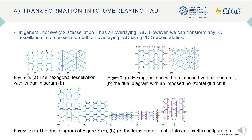However, not every two-dimensional polyhedral system has an overlaying TAD structure. For instance, given the hexagonal system of Figure 6a, the vertical grid doesn't provide an overlaying TAD — it cuts the hexagonal system into rectangles and triangles, as shown in Figure 7a. However, using 2DGS, we can turn this system into a system with an overlaying TAD structure. We consider the dual diagram of Figure 6a, which is Figure 6b.